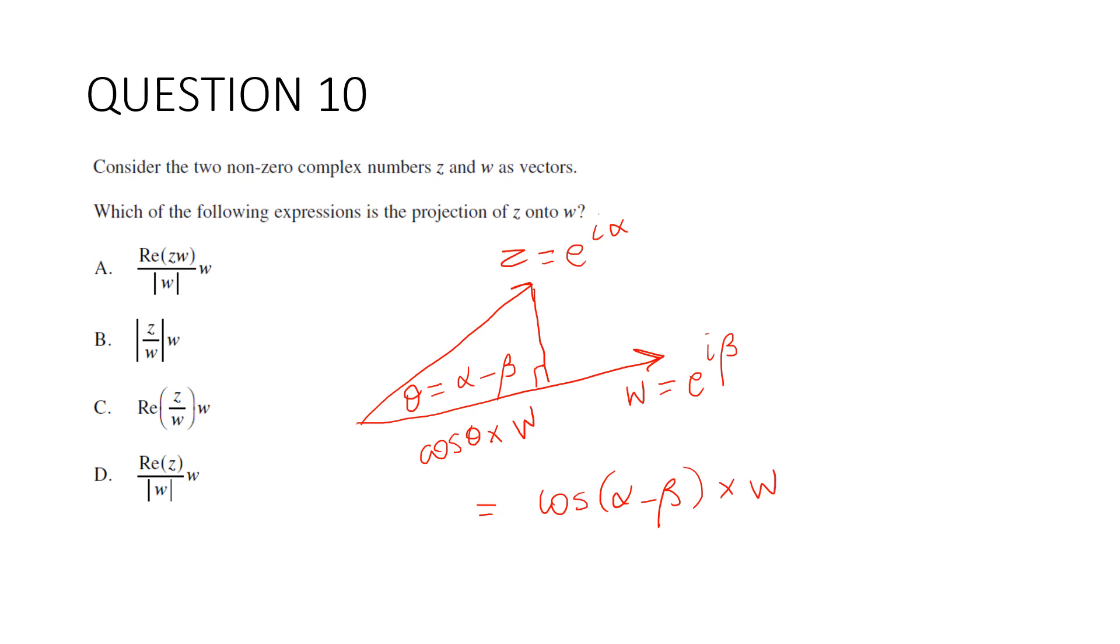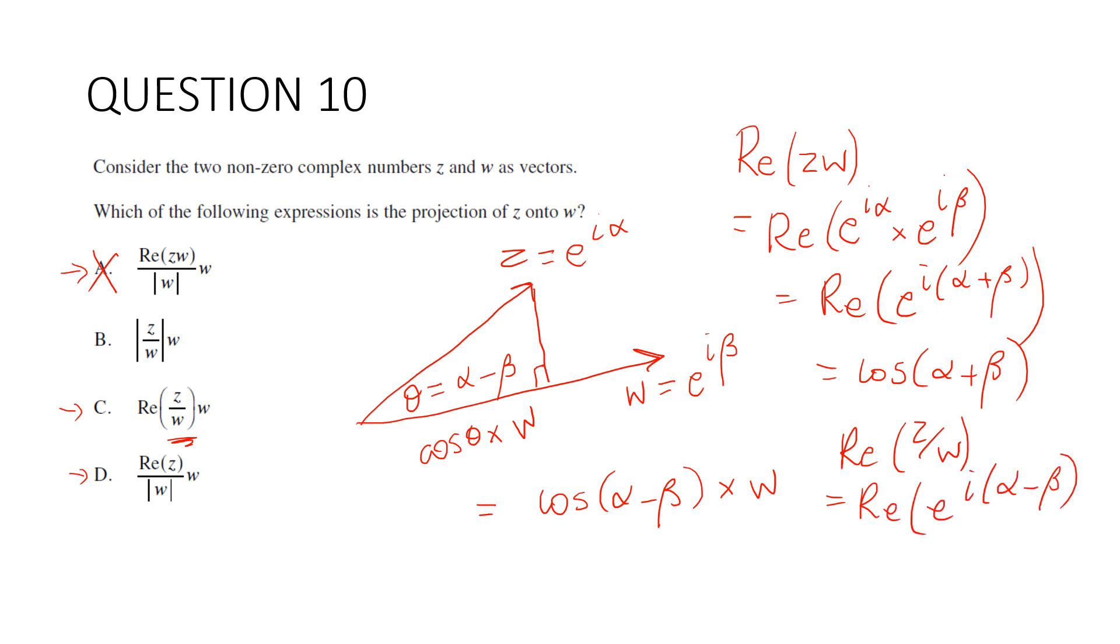Now, if we have a look through all of these, we've got an awful lot that have this real part of some vector. So let's work out, let's just work through these. Let's work out the real part of Z W and see whether it could be that one. So the real part of E to the I alpha times E to the I beta is equal to the real part of E to the I alpha plus beta. And that's going to be cos alpha plus beta. So it's not that one. And in fact, I know which one it's going to be. It's going to be this one, isn't it? Let's just check that out. The real part of Z over W would be E to the I alpha minus beta, which is cos alpha minus beta. And then we would multiply that by the vector W. So our answer is C.